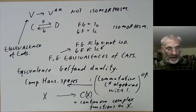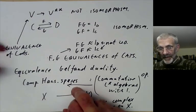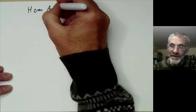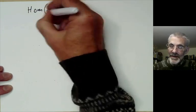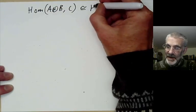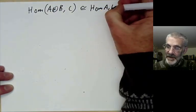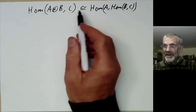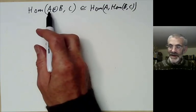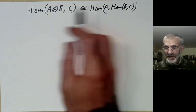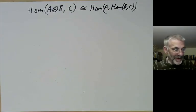Another example of a natural isomorphism: the tensor product of abelian groups gives a group that is essentially the same as Hom(A, Hom(B, C)). 'Essentially the same' means there is a natural isomorphism between these two functors, each being functors of three variables.